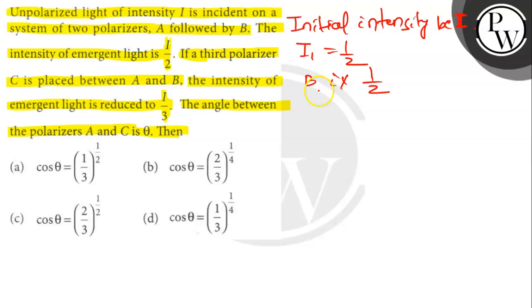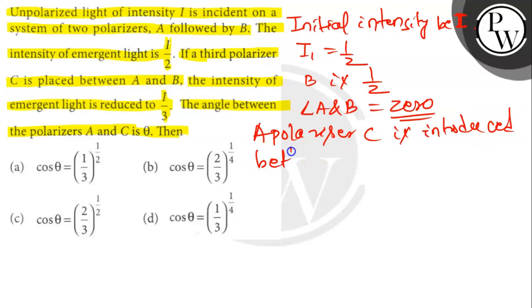Then angle between A and B is... angle between A and B is 0. A polarizer C introduced between A and C.